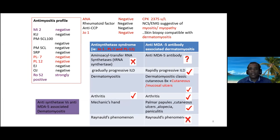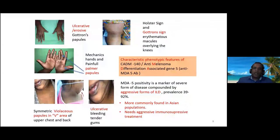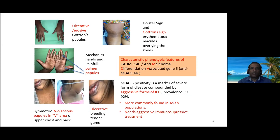We were unable to do the anti-melanoma differentiating antibody 5 (MDA-5) test as Sri Lanka does not currently have the facility. However, going through the history, presentation, and phenotypic features, we had sufficient evidence to conclude this was MDA-5 antibody-positive dermatomyositis. The patient had ulcerative Gottron's papules, a holster sign, erythematous macules over the knees, and palmar papules — features associated with more aggressive dermatomyositis seen in MDA-5 antibody positivity. She also had gum bleeds and oral ulcers.